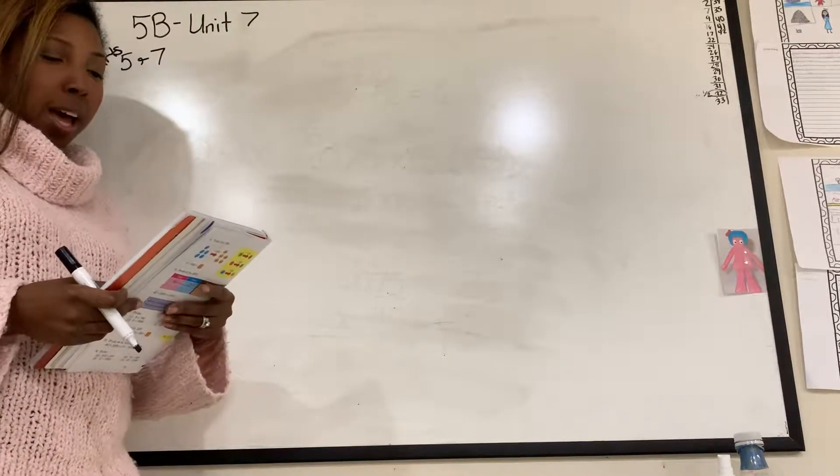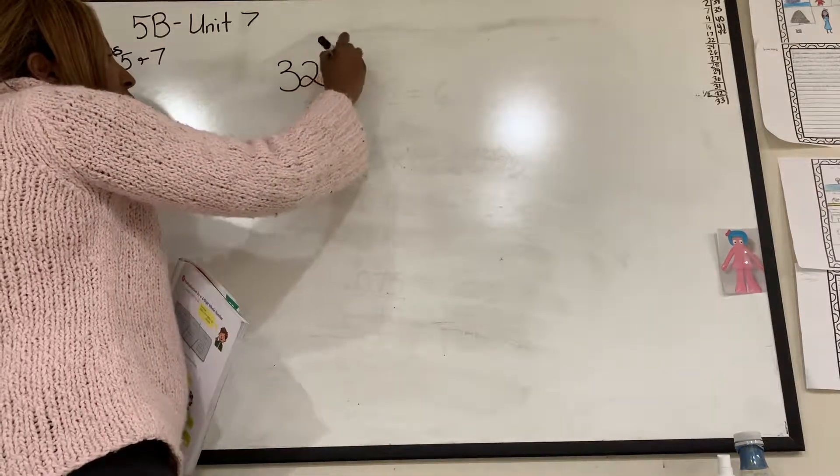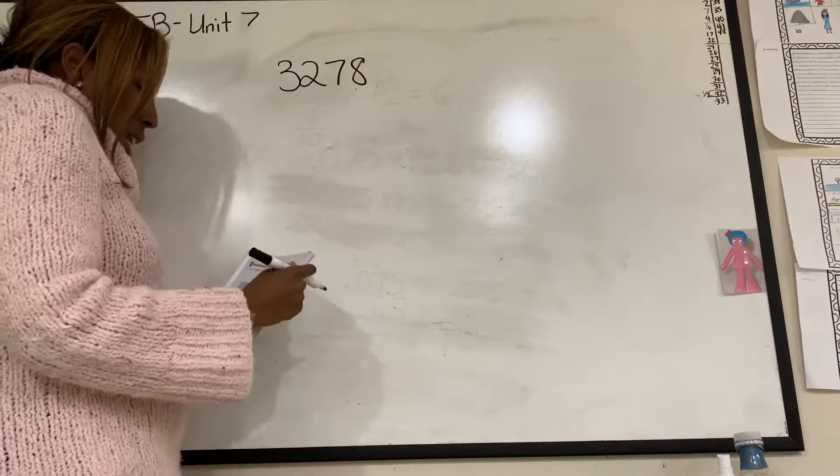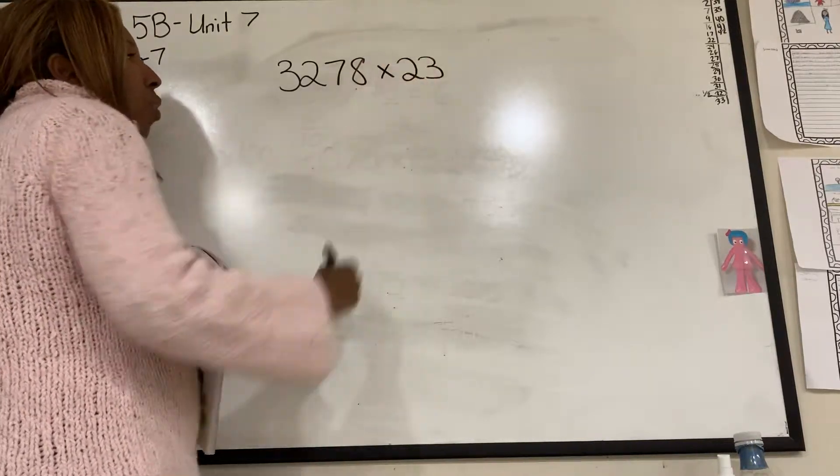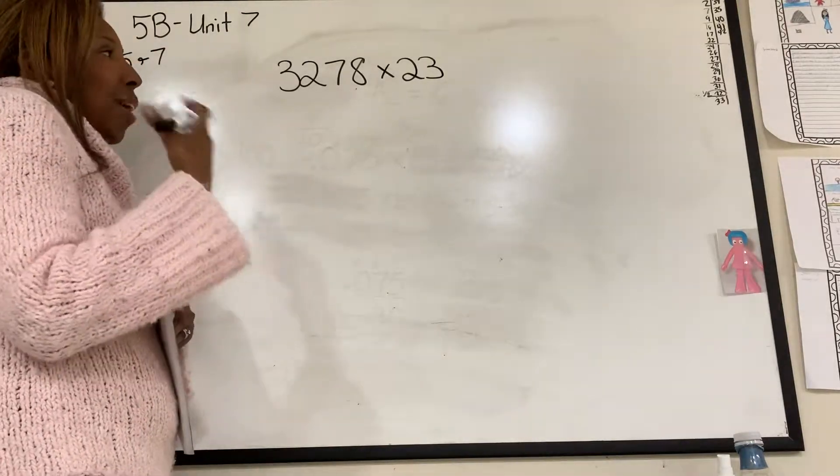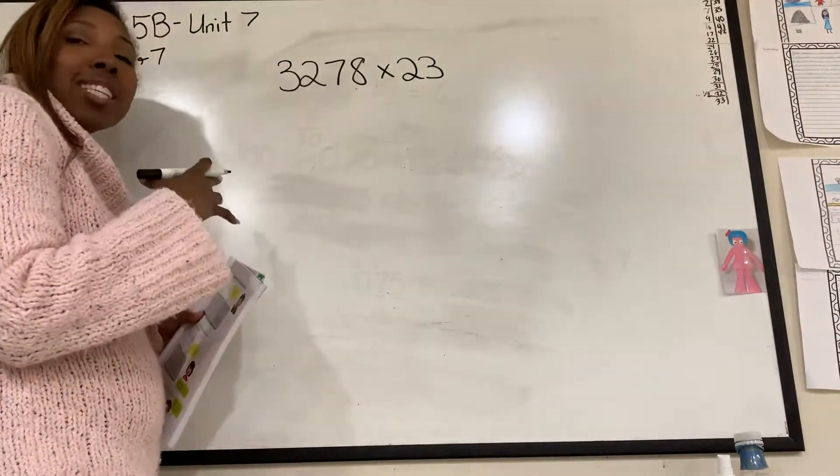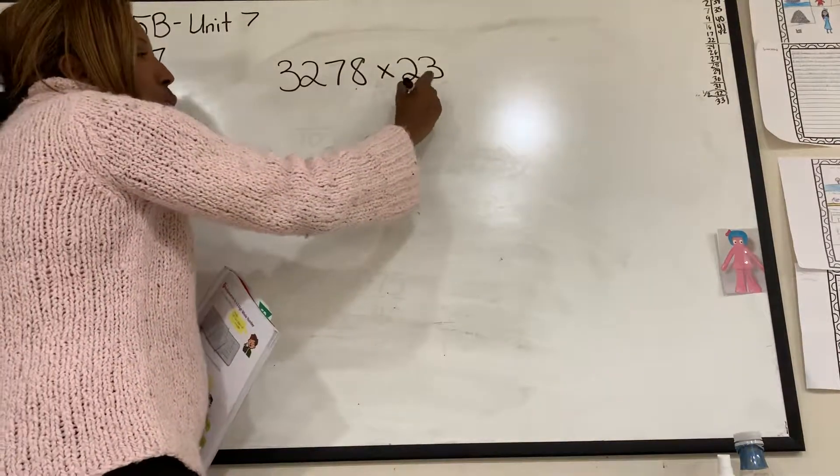So the first one says multiply. So we're going to have 3,278 times 23. So first in your mind, you're going to think about estimating. You're not actually estimating because they don't want you to estimate, but it's going to help you to come up with your answer.